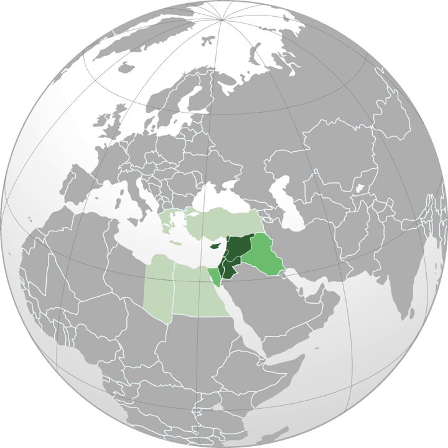In the 13th and 14th centuries, the term levante was used for Italian maritime commerce in the eastern Mediterranean, including Greece, Anatolia, Syria-Palestine, and Egypt — that is, the lands east of Venice.